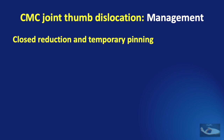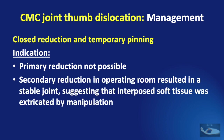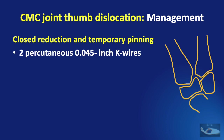The indication for closed reduction and temporary pinning is when primary reduction is not possible but secondary reduction in the operating room results in a stable joint, suggesting that interposed soft tissue was extricated by manipulation. In such a situation, two percutaneous 0.045-inch K-wires are used to provide extra support.